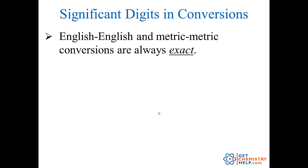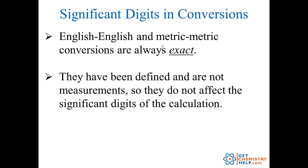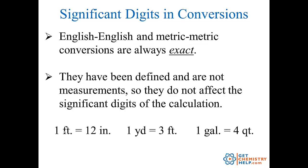Now the question comes: how about the significant digits in that conversion? Well, there are a few different cases. If I'm converting English system units to English system units, those are always exact conversions. Or if I'm converting metric system units to other metric system units, those are exact. So these have all been defined. For example, one foot and 12 inches are both from the English system — one foot has been defined to be exactly 12 inches, not measured to be about 12 inches. So English to English, those are always exact. These do not have significant figures because they're not measurements.